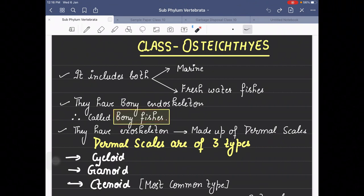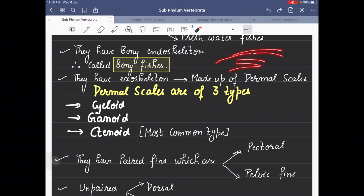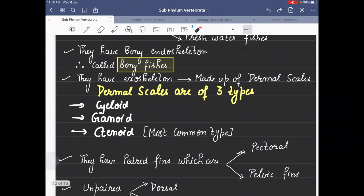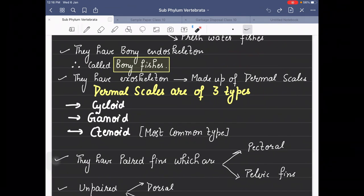Now for exoskeleton, yesterday we talked about placoid scales. Here the scales are dermal scales of three types: cycloid, ganoid, and ctenoid. Out of these three, the most common type is ctenoid scales.